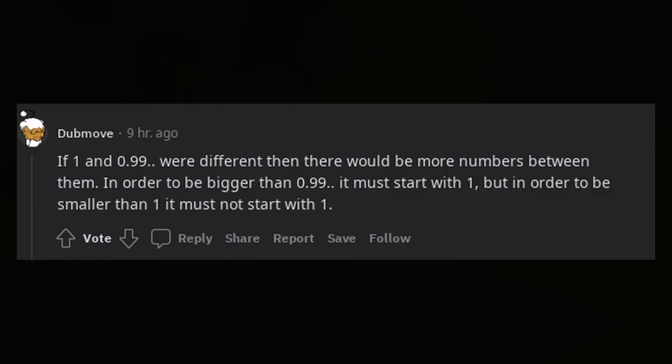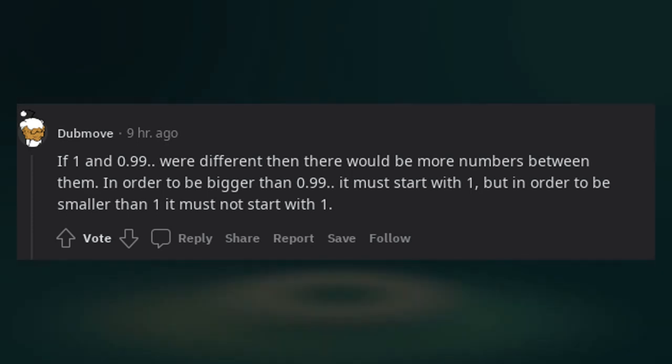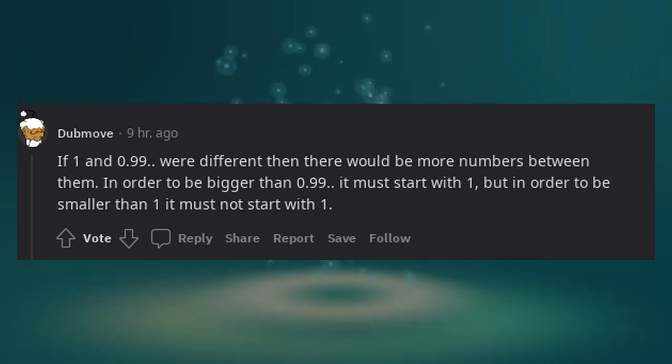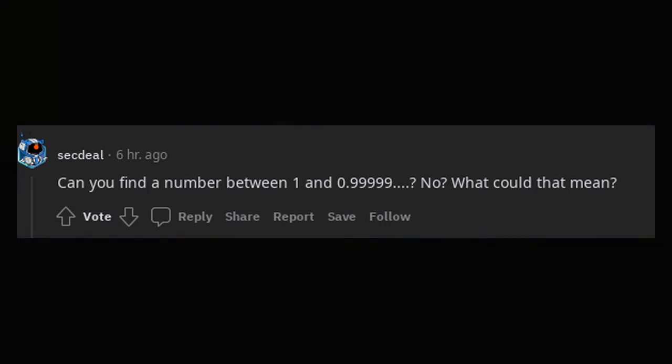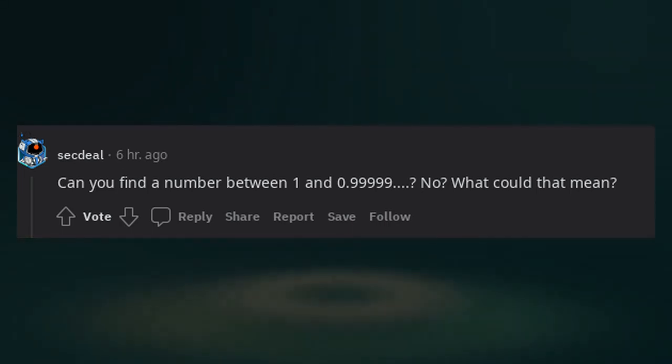If 1 and 0.99 repeating were different, then there would be more numbers between them. In order to be bigger than 0.99 repeating it must start with 1, but in order to be smaller than 1 it must not start with 1. Can you find a number between 1 and 0.99999 repeating? No? What could that mean?